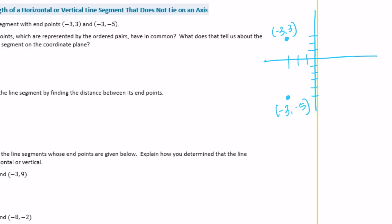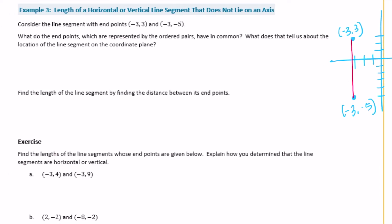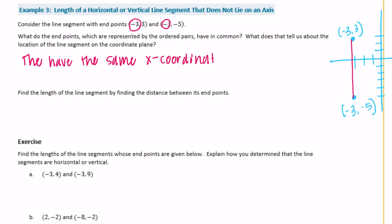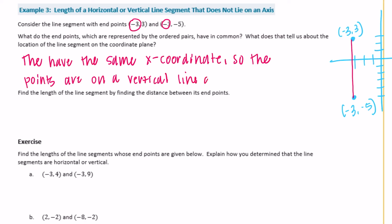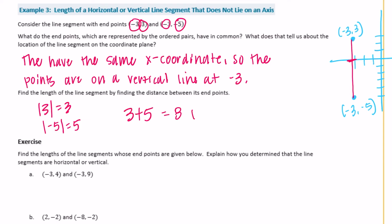They have the same x-coordinate, so the points are on a vertical line at negative 3. To find the length: the absolute value of 3 is 3, and the absolute value of negative 5 is 5. Since they're on opposite sides of zero, we add them together: 3 plus 5 equals 8. So they are 8 units apart.